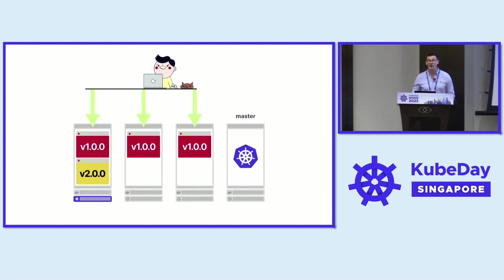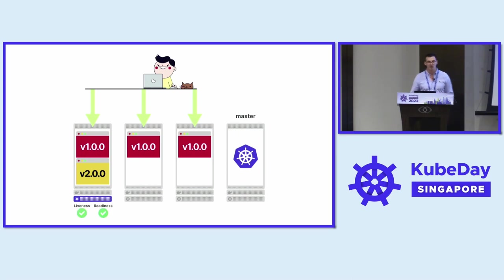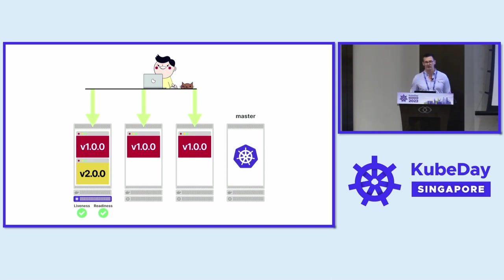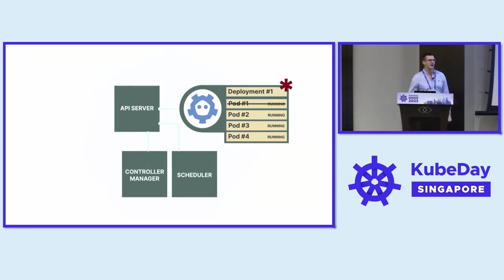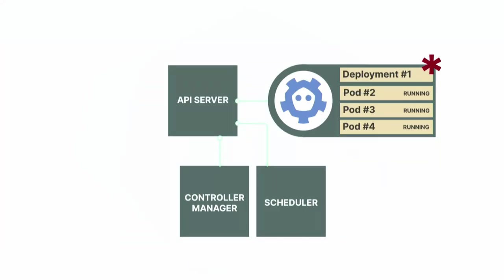But is that enough? Not yet — before terminating the old pod, the kubelet will execute liveness and readiness probes. When the readiness probe passes, the kubelet reports back to the control plane that the pod is ready to receive traffic. Then the controller manager says okay, we've done the first one — that's when we terminate the old pod. Now we've got only three pods running in the cluster.